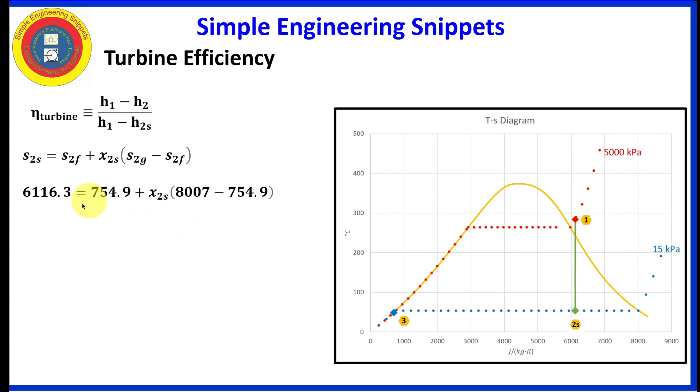Now that we have that, we can substitute in the property values into our equation. And the only unknown is the quality at point 2S. If we could solve for that, it comes out to be 0.74. And now that we know that, we can substitute that in. Because we do know the saturation properties at 15 kilopascals are straight out of our property tables. And we put that in. Now we can calculate the enthalpy at point 2S and obtain this value.